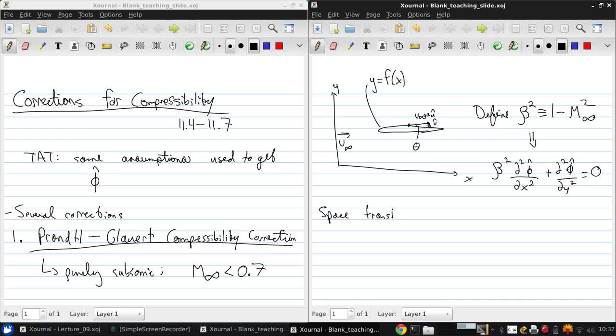Essentially, we're going to redefine our spatial variables: xi equals x and eta equals beta times y. So, we've changed our spatial variables from x and y to xi and eta.